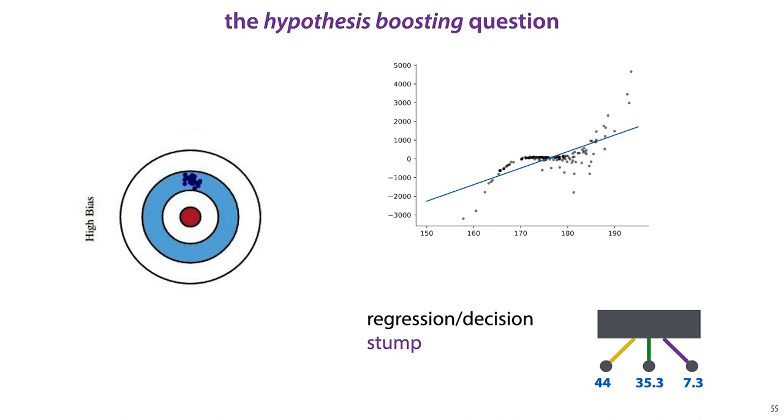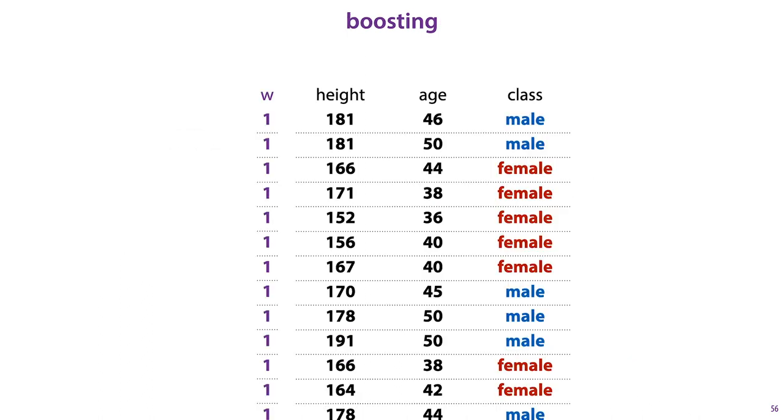and to create an ensemble that together has low bias, possibly at the expense of a slightly higher variance? The answer is boosting.